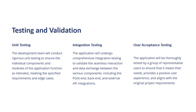Now let us see testing and validation. The development team will conduct rigorous unit testing to ensure the individual components and modules of the application function as intended, meeting the specified requirements and edge cases. For integration testing, the application will undergo comprehensive integration testing to validate the seamless interaction and data exchange between the various components, including the front-end, back-end, and external API integrations. For user acceptance testing, the application will be thoroughly tested by a group of representative users to ensure it meets their needs, provides a positive user experience, and aligns with the original project requirements.